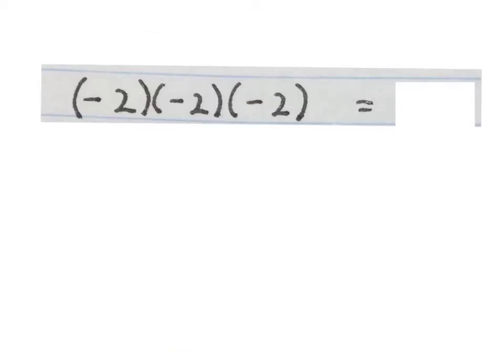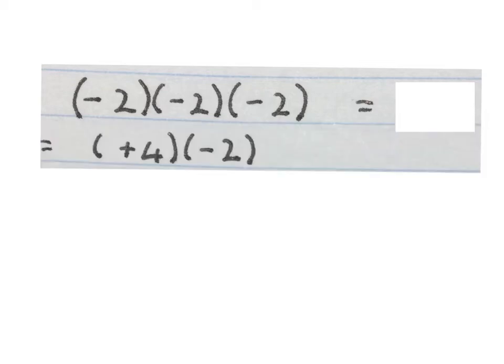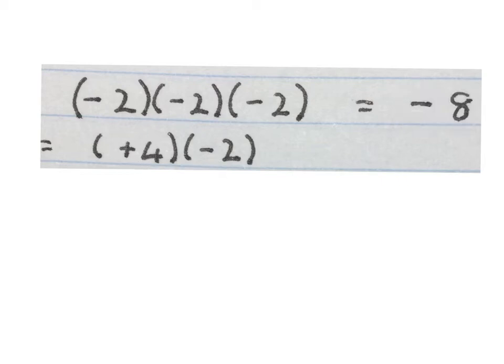Let's see what happens if we multiply 3 negative numbers together. The negative 2 times the negative 2 gives us a positive 4. Then positive 4 times a negative 2 gives us a final answer of minus 8.